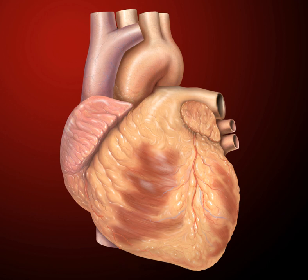In humans, the heart is located between the lungs, in the middle compartment of the chest. In humans, other mammals, and birds, the heart is divided into four chambers: upper left and right atria, and lower left and right ventricles.